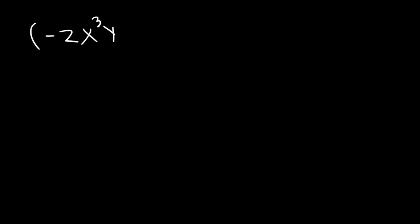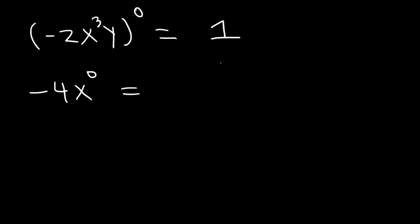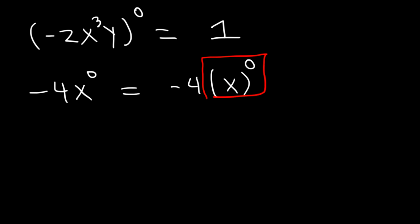What is negative 2x cubed y raised to the 0 power? Anything raised to the 0 power is 1. Now, what about negative 4x to the 0 power? This is negative 4 times x raised to the 0 power. The 0 only applies to x, so x to the 0 equals 1, and it's negative 4 times 1, which is negative 4. Anything affected by the 0 exponent becomes 1; anything outside of that is unaffected.